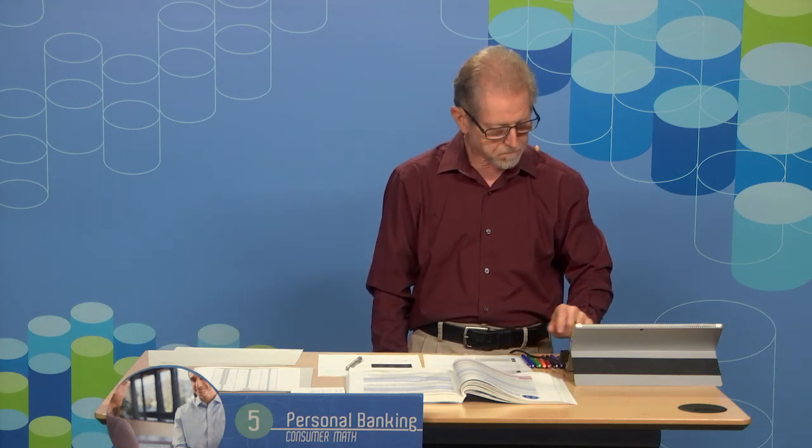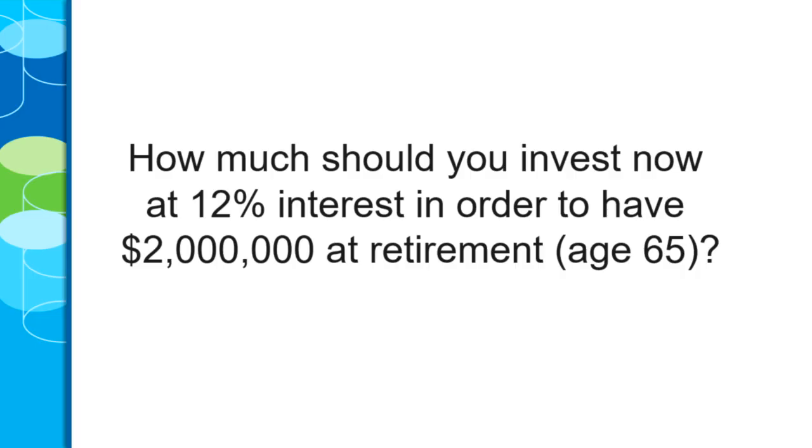Where do you get these kinds of investment rates? We'll talk about that. So, how much should you invest now at 12% interest in order to have $2,000,000 at retirement? Let's assume your age is 17 and retirement is 65 — that's 48 years. Rule of 72 divided by 12% gives every 6 years to double, and 48 divided by 6 gives you 8 doubling periods.